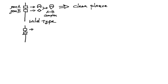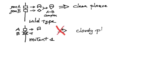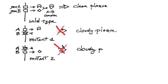If a mutant lacks protein B, absence of the AB complex prevents efficient killing leading to a cloudy plaque, that is where some bacteria are still alive. The same is true for a mutant lacking protein A.